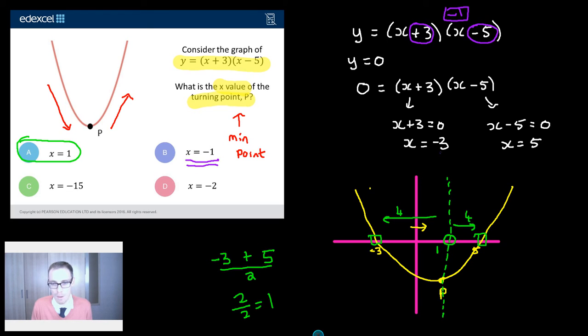The crossing points are at minus 3 and positive 5. Hence why we get 1. So I reckon students who've got minus 1 have just taken the average of plus 3 and minus 5.